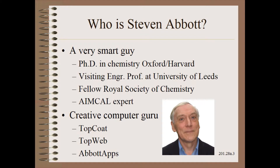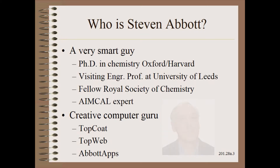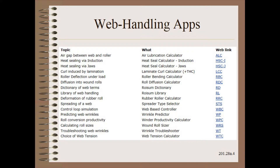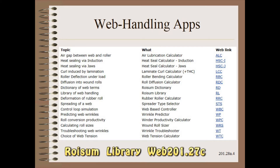He is also the author of some much heavier duty programs such as Top Coat and Top Web. Currently, there are well over a dozen apps in the web handling area. They cover a variety of must-know subjects including rollers, tension control, winding, wrinkling, and so on. We will only do a few in this YouTube series as most are apparent how to use them. However, if in doubt, all the apps have generous help screens. Also, we will not cover the Roysum Library because it was already covered in the last series in Web 201.27c.